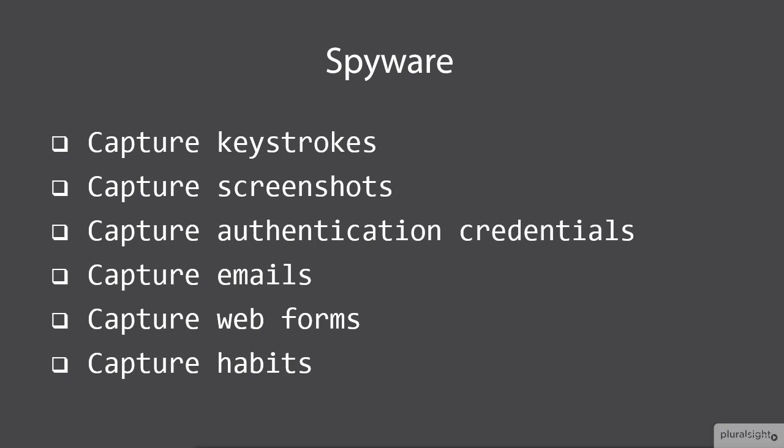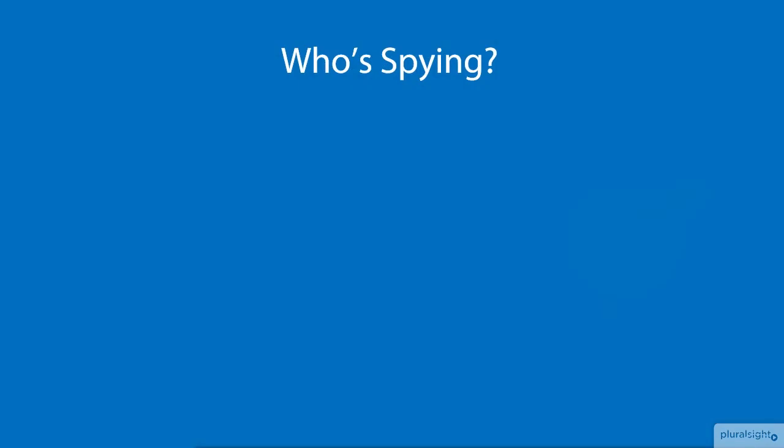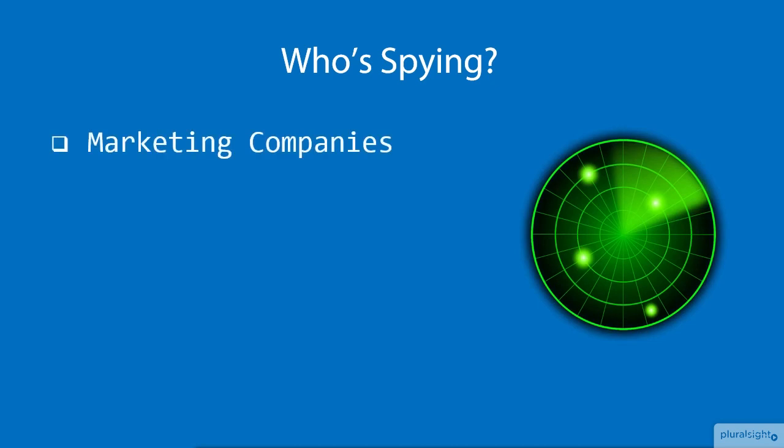Who's spying on us? We've talked about marketing companies as well as software vendors. But yes — organized crime. I know we typically think of the mob, but trust me, big money is being made in hacking and organized crime. It's out there.